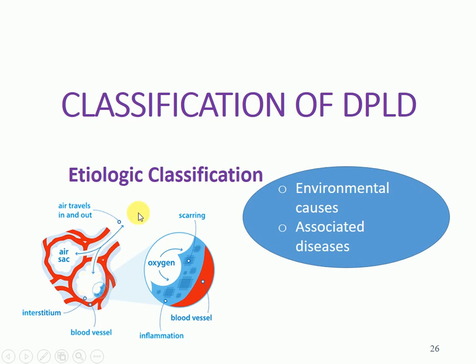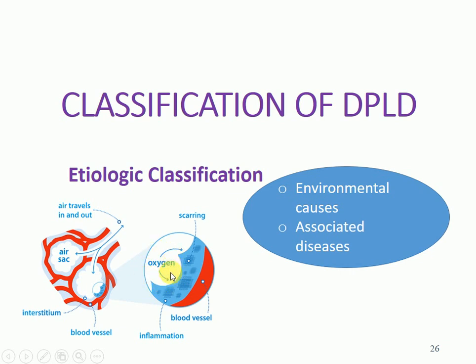Carbon dioxide is removed from the blood and expelled outside. So, once scarring or fibrosis and inflammation occur in the interstitium of the pulmonary, there will be scarring. Once someone has fibrosis in the interstitium of the lungs, it restricts the diffusion of oxygen from the air sacs into the blood, and it becomes difficult for carbon dioxide to diffuse from the blood vessels into the lungs. Fibrosis affects the whole process of gaseous exchange.